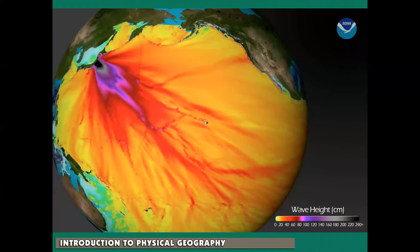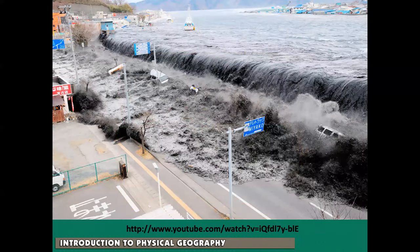Or the tsunami in Japan in 2011, and how it affected essentially the entire oceanic basin of the Pacific Ocean. One event really far away can have consequences the world over. Because of a displacement of the crust under the ocean water, eventually that water had to go somewhere, and that somewhere was inland in Japan.